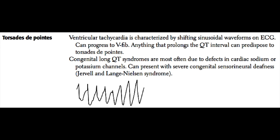This slide shows an arrhythmia you should be very familiar with: torsade de pointes, which is French for 'twisting around a point.' Torsade is a polymorphic ventricular tachycardia, meaning each wave looks different than the previous and following one. This is a V-tach characterized by a sinusoidal waveform on ECG. Torsade is dangerous because it is a very fast rhythm that does not allow time for the ventricle to fill between beats, and therefore can cause hypotension. Torsade can then progress to ventricular fibrillation when the heart becomes severely ischemic.